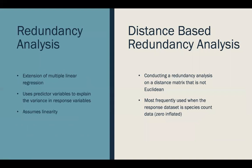Distance-based redundancy analysis is essentially the same thing as redundancy analysis, except it performs a redundancy analysis on a distance matrix that is not Euclidean. A requirement for standard RDA is that you have a metric distance measure in a metric space, and not semi-metric distance matrices. Distance-based redundancy analysis is most frequently used in species community data sets because these data sets tend to be very zero-inflated, so using distance or dissimilarity matrices is helpful in accounting for this high presence of zeros.